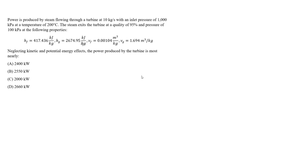Now I want to do an example for turbines, specifically finding the power produced by a turbine. For this FE-type question, we're told power is produced by steam flowing through a turbine at 10 kilograms per second, with an inlet pressure of 1000 kilopascals and a temperature of 200 degrees Celsius. The steam exits the turbine at a quality of 95% and a pressure of 100 kilopascals.